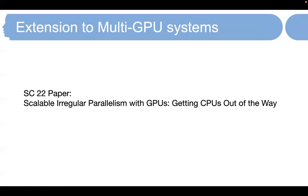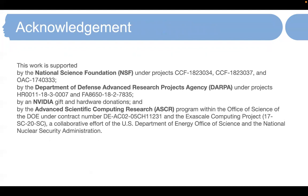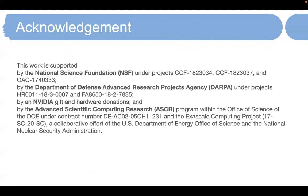We have extended this work to multi-GPUs. The same idea works for both single-node multi-GPU systems and multi-node systems. You can read more detail about our multi-GPU extension in our upcoming Supercomputing paper, 'Scalable Irregular Parallelism with GPUs: Getting CPUs Out of the Way.' Lastly, we want to thank NSF, DARPA, NVIDIA, and AICR for funding this work. That's it for today's presentation. Thanks for listening.